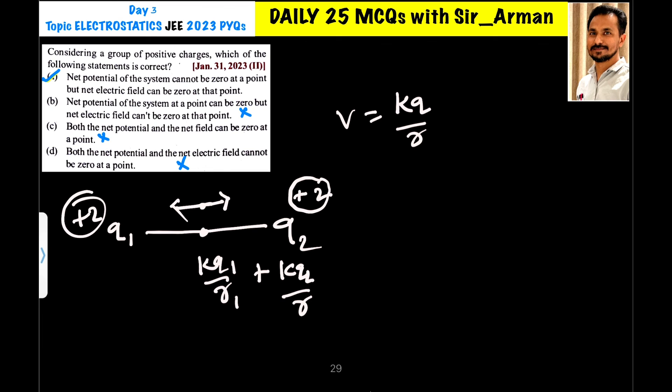That already I have explained. See, both the net potential and net electric field can be zero. No. Both net potential and electric field cannot be zero. No. Because, see, net potential cannot be zero, that is correct. But net electric field can be zero that I have proved here.